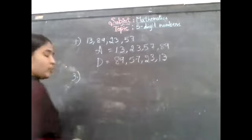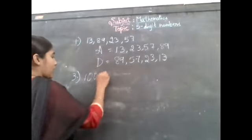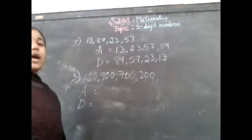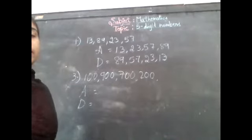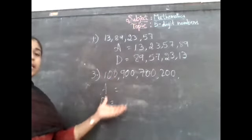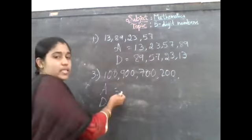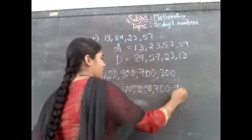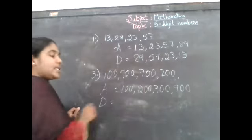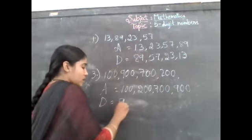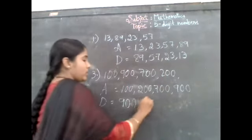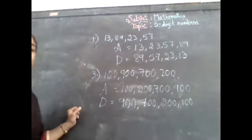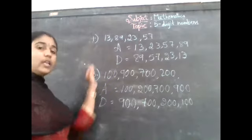Now let us go for 3-digit numbers. I give you 100, 900, 700, 200. Arrange these numbers in ascending as well as descending. Ascending — small to big — that is 100, 200, 700, 900. And descending is opposite of ascending, bigger number to smaller number: 900, 700, 200, 100. So we have got both 2-digit and 3-digit numbers in ascending and descending.